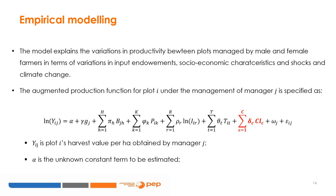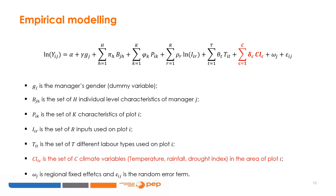The model explains the variations in productivity between plots managed by male and female farmers in terms of variations in input endowments, socioeconomic characteristics, and shocks and climate change. The augmented production function for plot I under the management of manager J is specified as defined here. Here are the specifications.